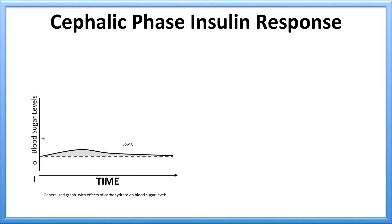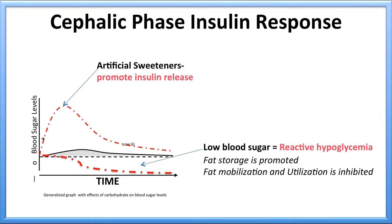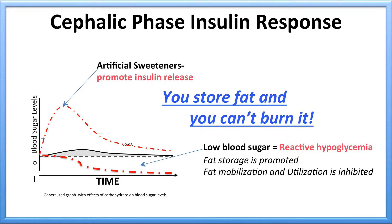Let's take a look at a picture. In the cephalic phase insulin response, on my graph, you can see time versus blood sugar levels. We talked about when artificial sweeteners are ingested and the tongue senses them, it promotes insulin release. Our gray area was our normal glucose response. But now, because of the insulin release, it creates a reactive hypoglycemic state, low blood sugar. Here, fat storage is promoted because of the insulin and fat mobilization and utilization is inhibited. Ultimately, you store fat and you can't burn it. This is exactly opposite to what most people want to do.